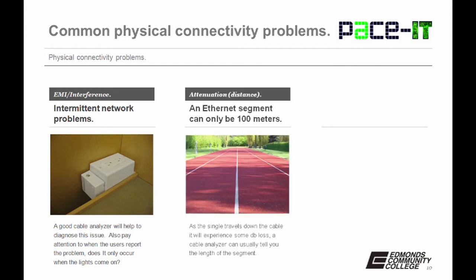Then there's attenuation. This involves distance. An Ethernet segment can only be 100 meters. As the signal travels down the cable, it will experience some decibel loss. A cable analyzer can usually tell you the length of a segment.